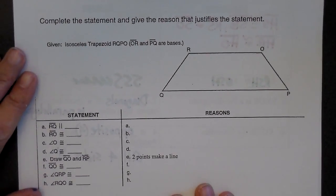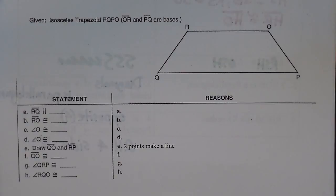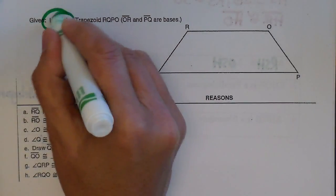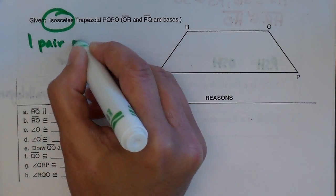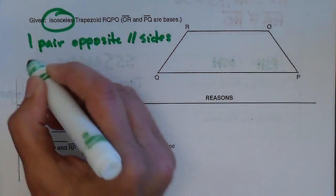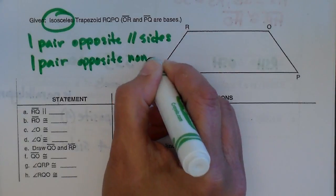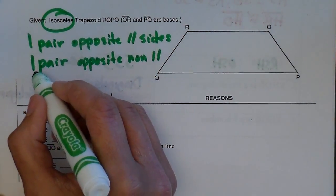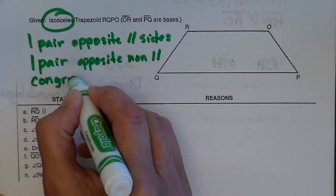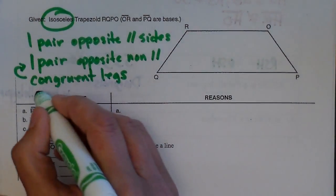So let's look at one trapezoid proof — we're almost done here. Let's give it an isosceles trapezoid. So an isosceles trapezoid has one pair of opposite parallel sides, one pair of opposite non-parallel sides, congruent legs, and congruent diagonals.